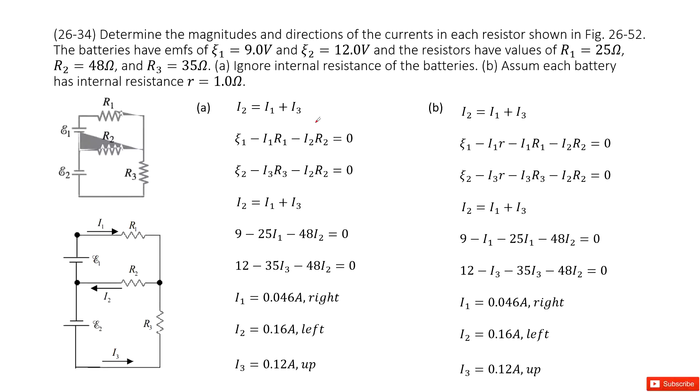Welcome to my channel. I'm Zhang Jingxu. Let's look at problem 34 in chapter 26. Chapter 26 is about DC circuits. We need to determine magnitude and direction for current in each resistor.